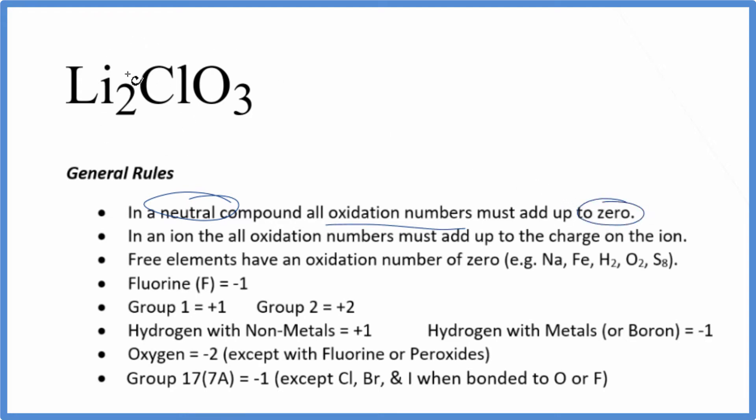We know that lithium is in group one on the periodic table, so it's going to have a plus one. That's each one of those lithium atoms there. For chlorine, we don't know that based on our rules. But oxygen is almost always minus two, with just a few exceptions. So each oxygen is minus two.